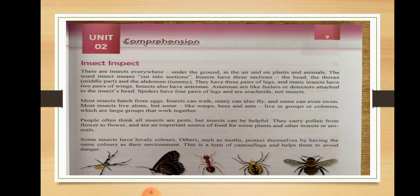The thorax is the middle part of an insect's body and usually bears wings. The abdomen is known as the tummy. Insects have 3 pairs of legs, meaning 6 legs, and many have 2 pairs of wings. Insects also have antennae — these are sensors, radars, or feelers attached to the insect's head that help them detect and sense danger around them.